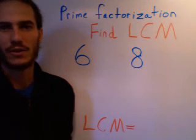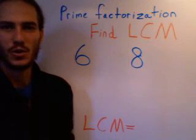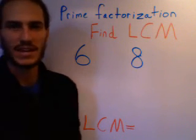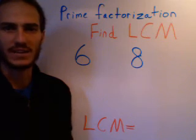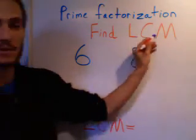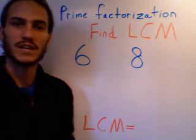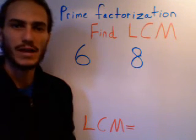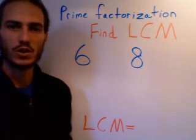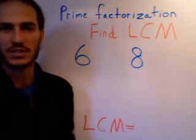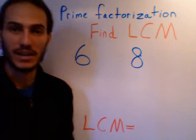Now, you might ask, why do I need to find the prime factorization? Well, this is the guaranteed way to always find the lowest common multiple. That's what LCM stands for, lowest common multiple. And you're going to need this when you go on to try to add fractions or subtract fractions with different denominators.